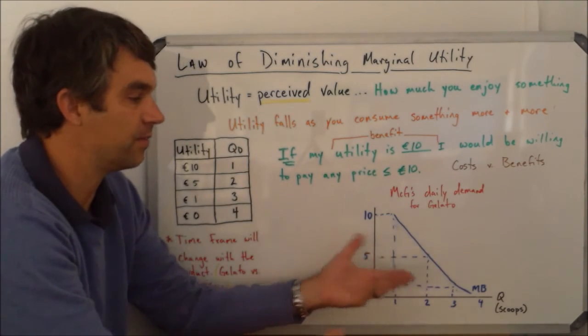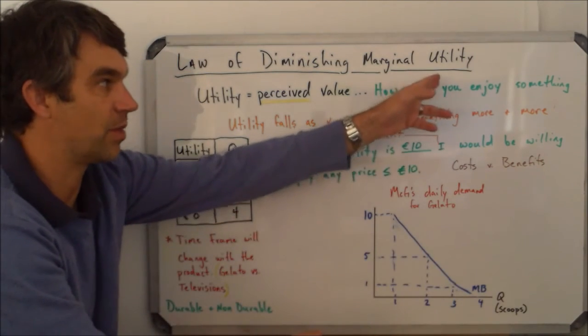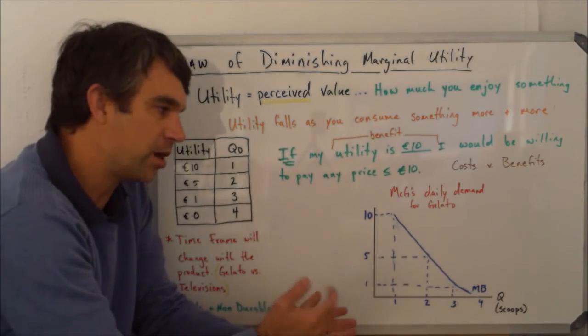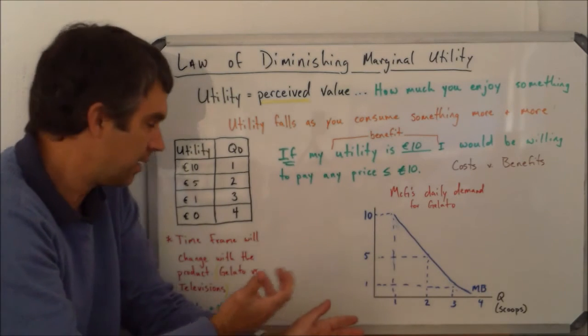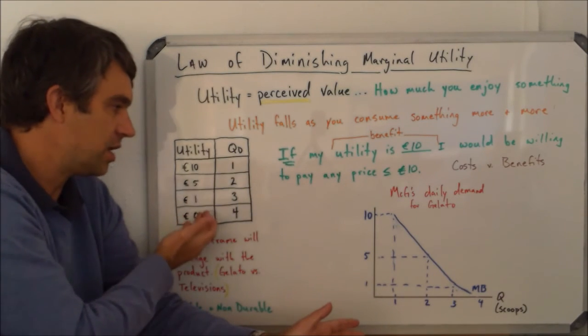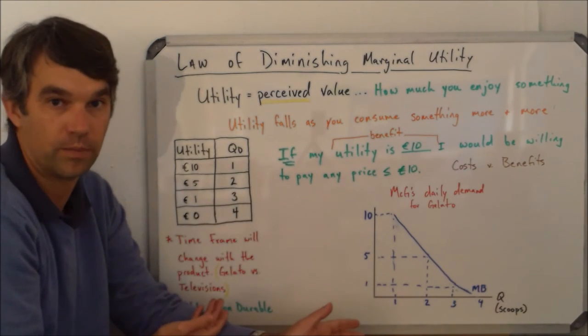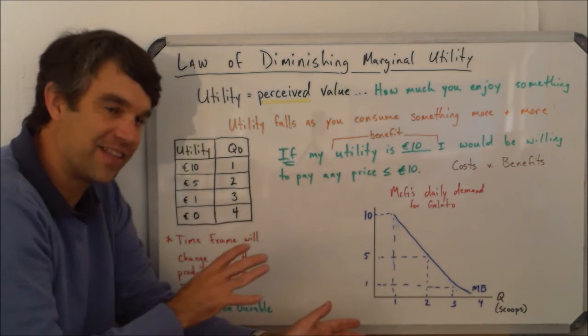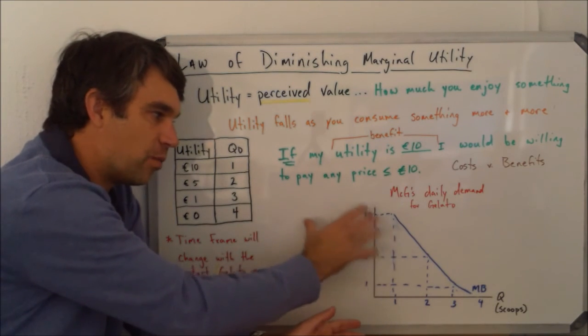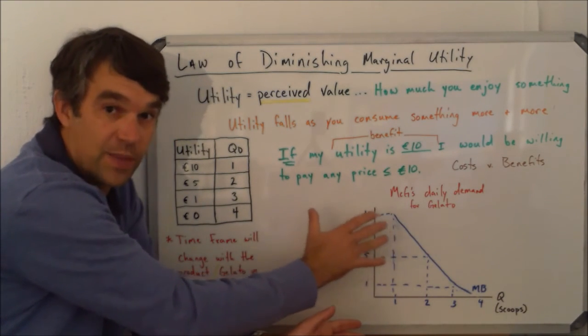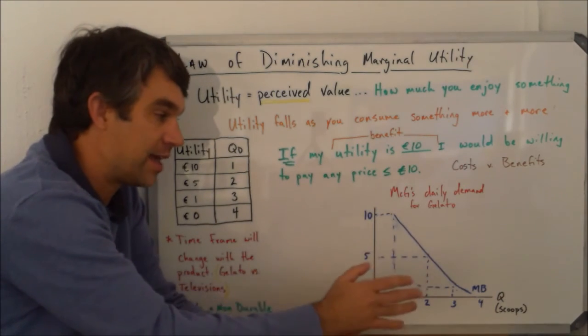So when we talk about marginal benefit, and marginal benefit is the same idea as marginal utility, my marginal benefit, my utility of each one has decreased as I consume more and more. So because of that, it's another reason why the demand curve takes the shape that it does take.